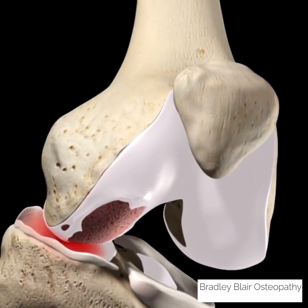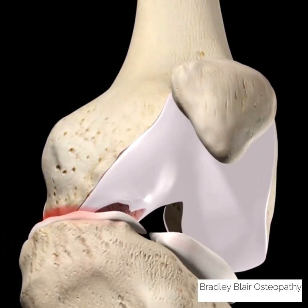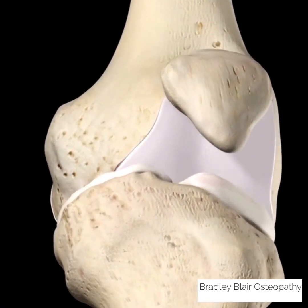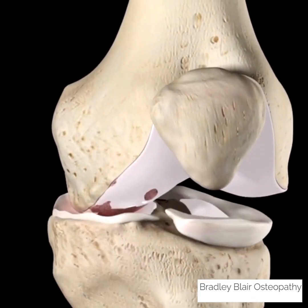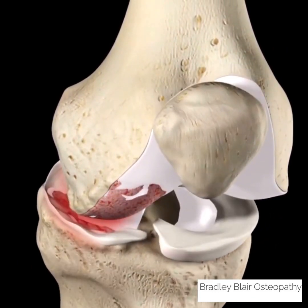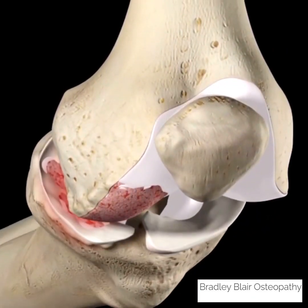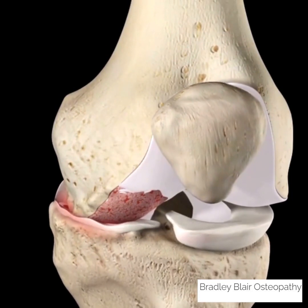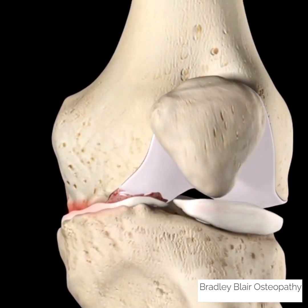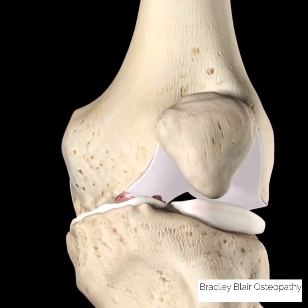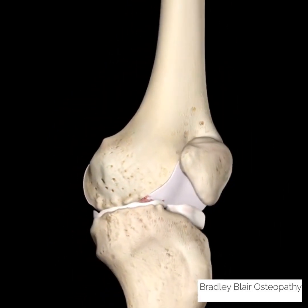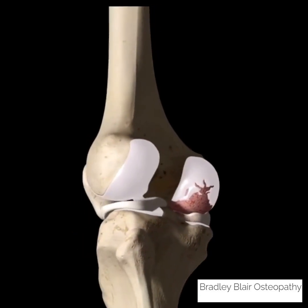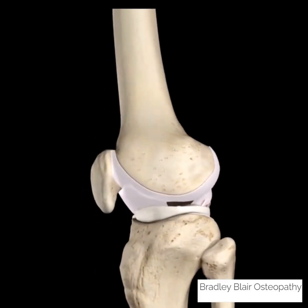Ligaments and muscles surrounding the joint may become weaker and bony spurs may develop, further contributing to damage of the joint. This animation demonstrates unicompartmental osteoarthritis on the medial aspect of the knee, which is often associated with the varus form of the leg, a bowlegged deformity.